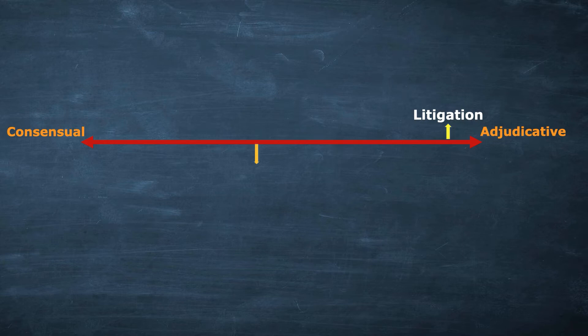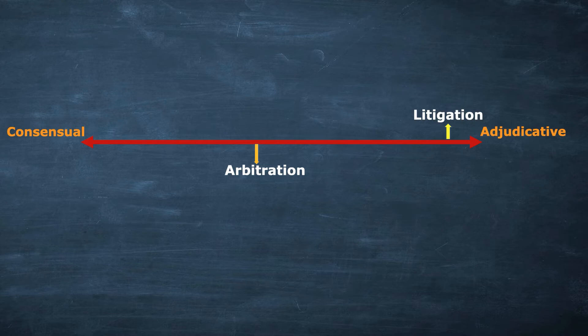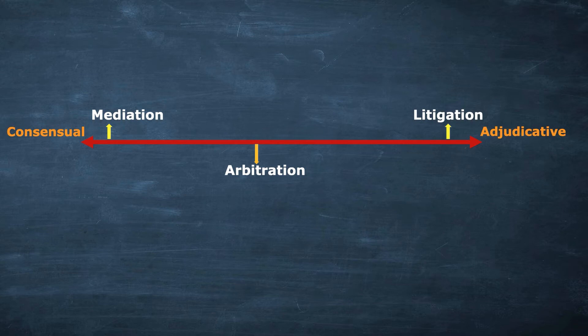The second term is arbitration. See where arbitration falls — it is less towards adjudicative and more towards consensual, meaning parties have comparatively more freedom here. The next term is mediation — see how mediation is very close to consensual, making it essentially completely consensual.